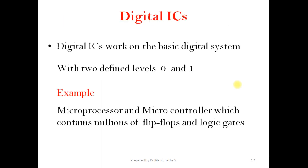Digital ICs work on the basic digital system with two different levels — that is, 0 and 1, or low state and high state. An example of digital ICs is the microprocessor and microcontroller, which contain millions of flip-flops and logic gates.